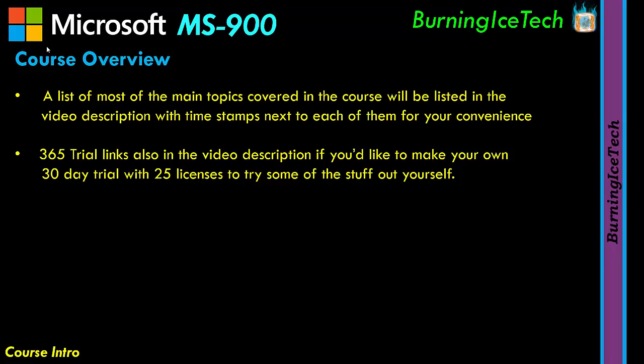Regarding the Live ID, you can just go and create yourself a brand new one — a fake one at www.live.com. You can give it a fake name, fake last name, fake everything. This will be just for the purposes of the trial and the course if you'd like to try it out yourself. It's going to give you 30 days and 25 licenses. What kind of licenses will depend on which one of the two links you use.